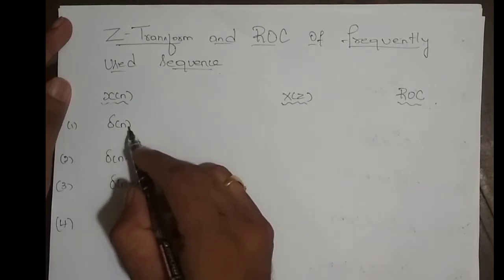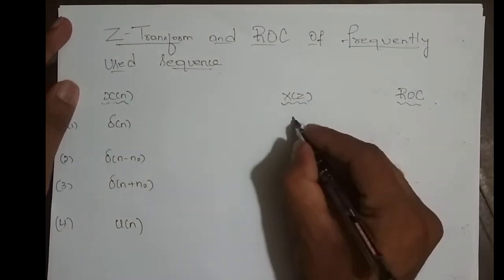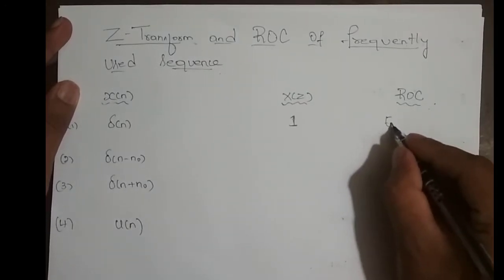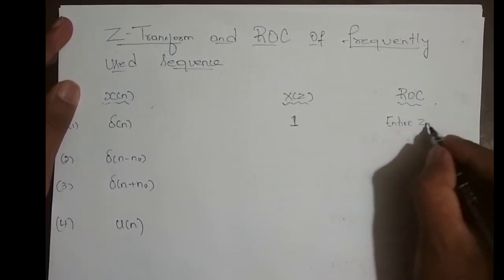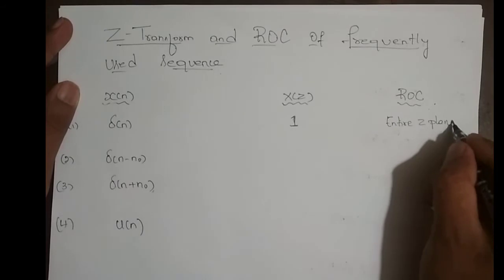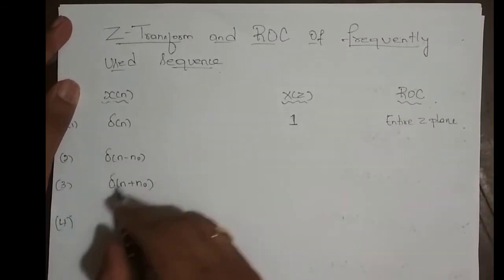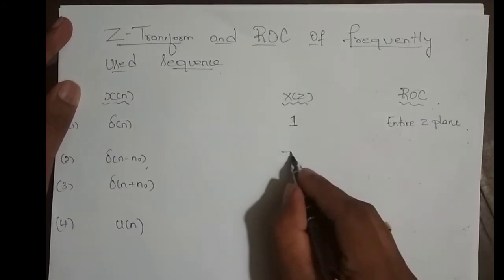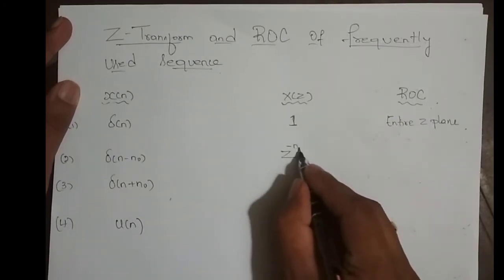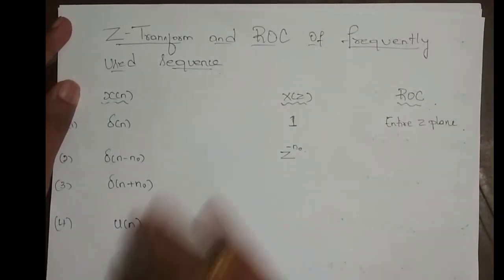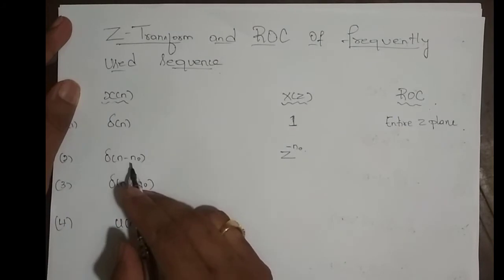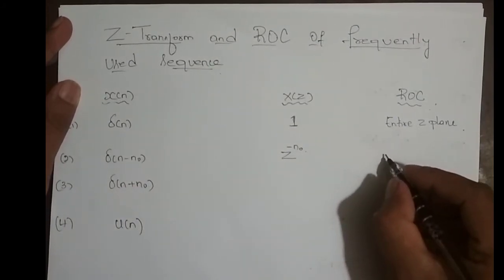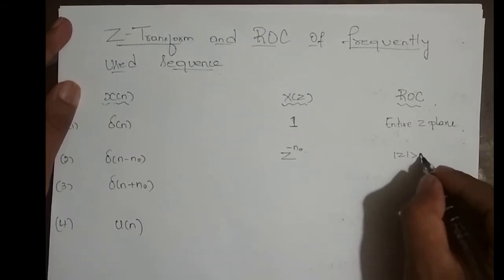We derived the Z-transform of delta(n) — it is 1, and its ROC is the entire Z-plane. What about delta(n - n₀), the right-shifted delta? Its Z-transform is z^(-n₀). This is a finite length right-sided sequence and its ROC is magnitude of z greater than zero.